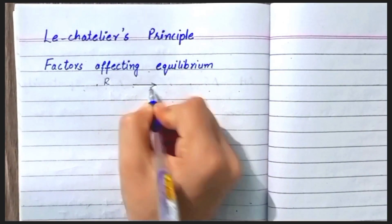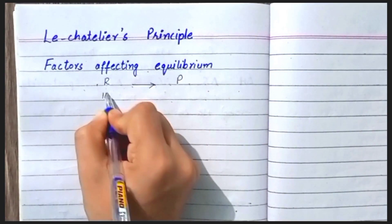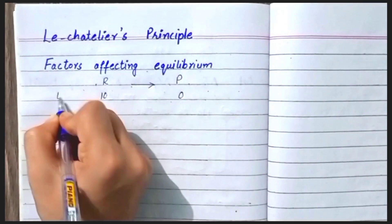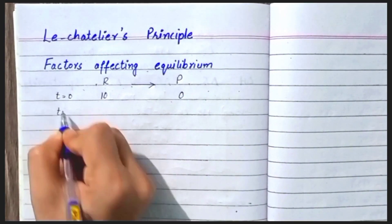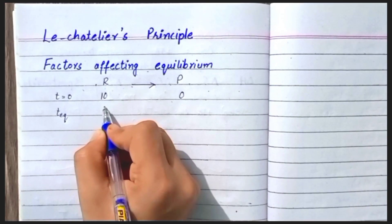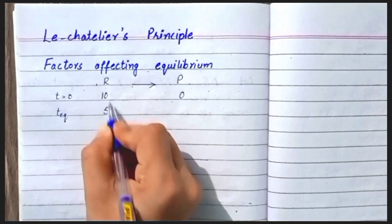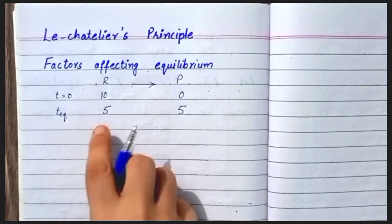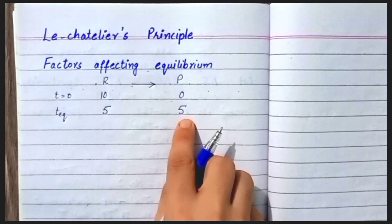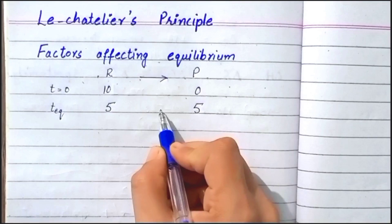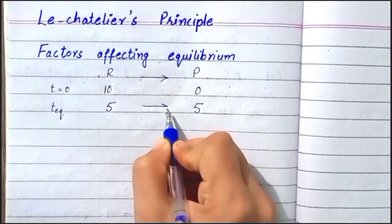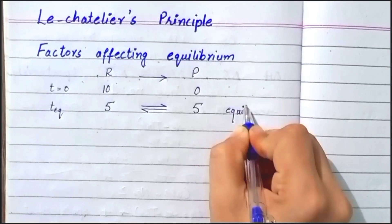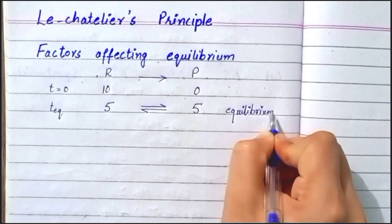For example, consider a reaction in which reactants are converted into products. We have 10 moles of reactants and 0 moles of product at time t equals 0. When equilibrium is achieved, we find that 5 moles remain as reactants and 5 moles are converted into product. The reactants and products remain constant when the rate of the forward reaction equals the rate of the reverse reaction. This state is called the equilibrium state.